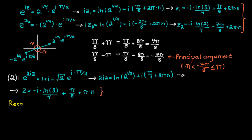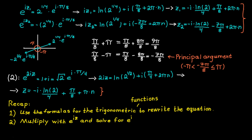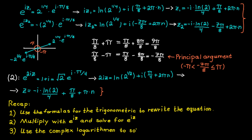Let's recap. When solving a trigonometric equation with complex numbers: first, use the definitions for trigonometric functions to rewrite the equation. Next, multiply both sides by e to the ic and solve for e to the ic. Finally, use the complex logarithm to solve for c — and for that you need the length of the complex number and the principal argument.